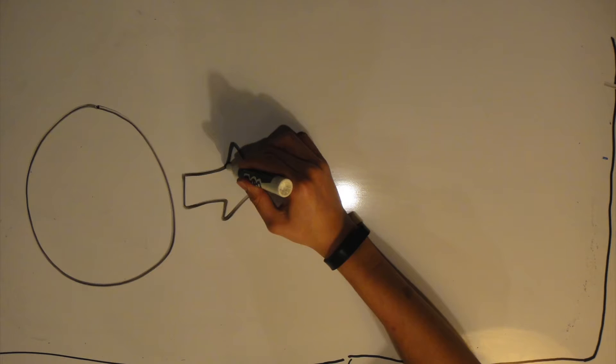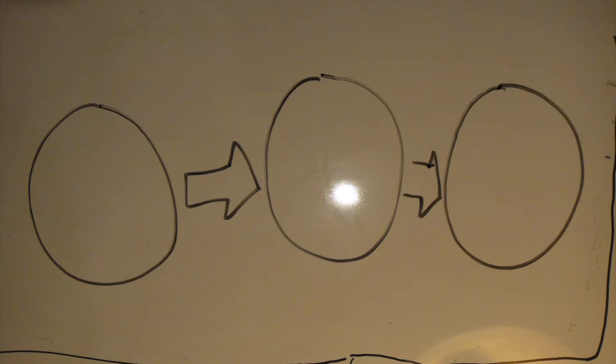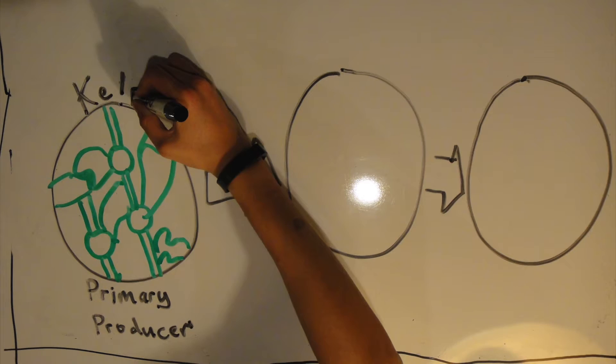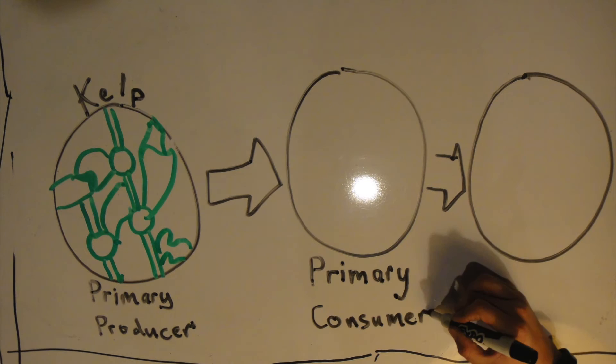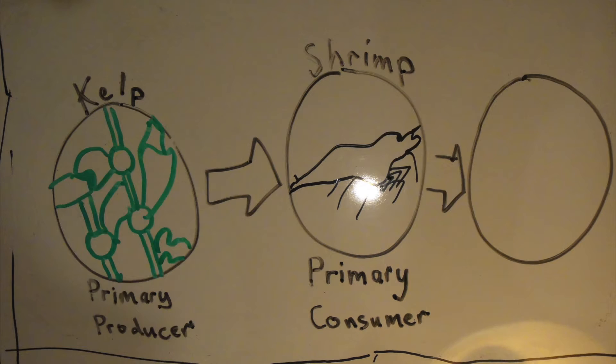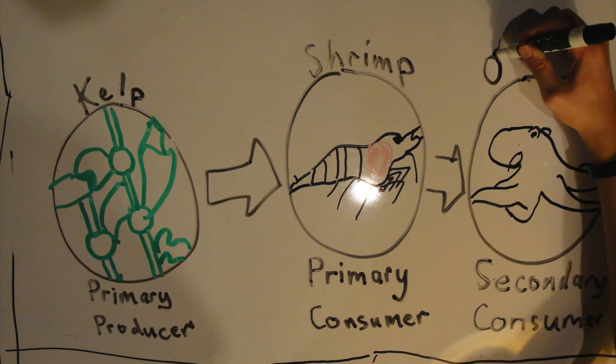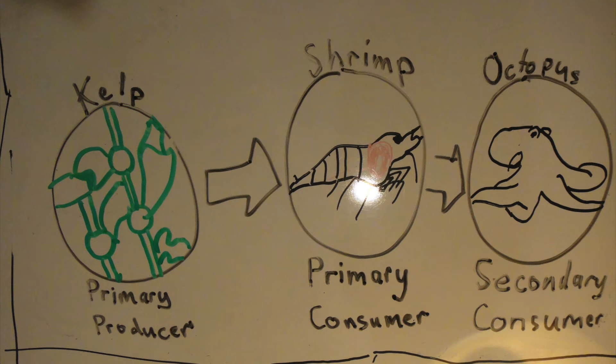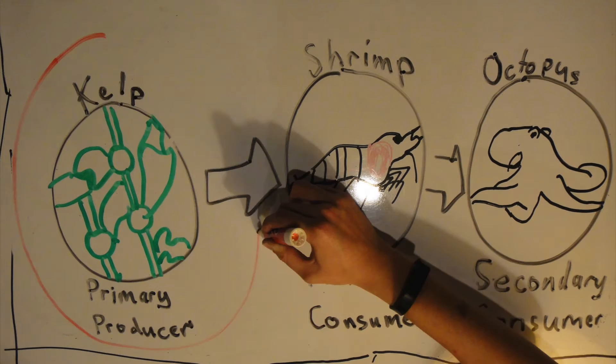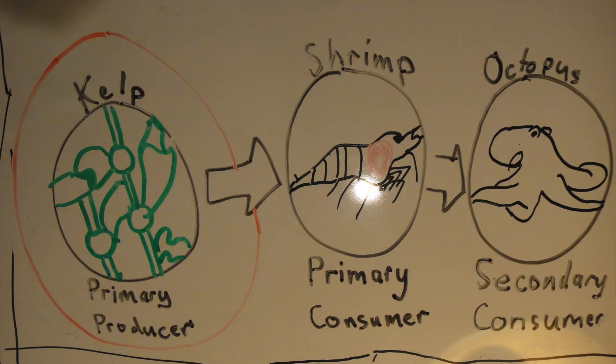Let's look at one food chain that happens inside the tide pools. We've got your primary producer, the brown algae kelp. Then the primary consumer, the glass shrimp, which eats the brown algae kelp. Then the secondary consumer, the California two-spot octopus, that eats glass shrimp. We'll first look at the beginning of the food chain, the primary producer.